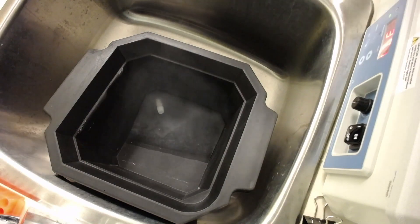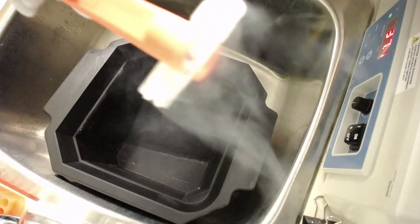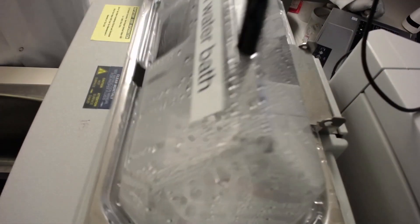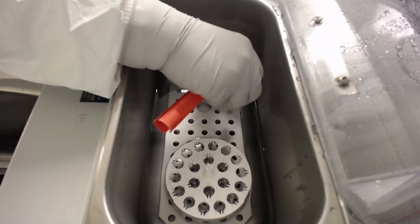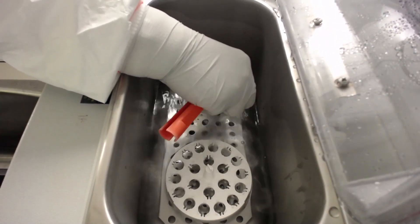Using forceps, carefully remove the cryovial from the container and transfer it to the water bath. Start thawing the vial by gently shaking it inside the 37 degrees Celsius water bath. Be careful to not wet the cap of the cryovial.